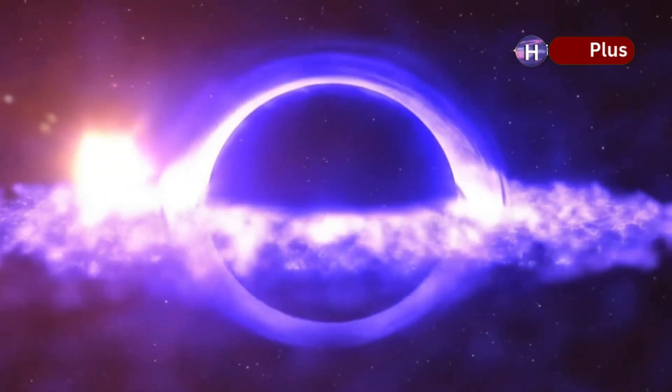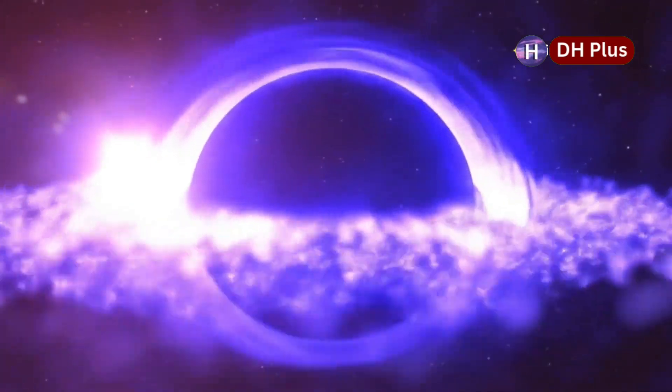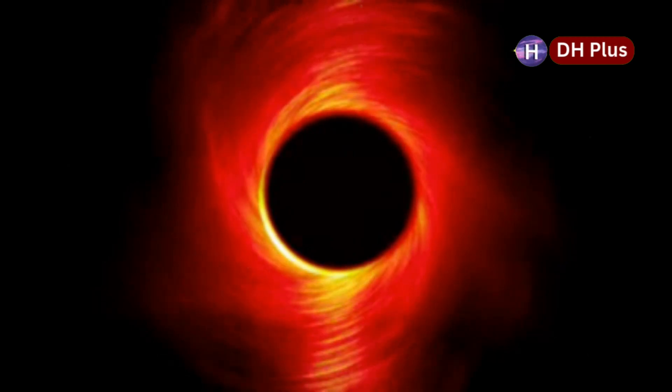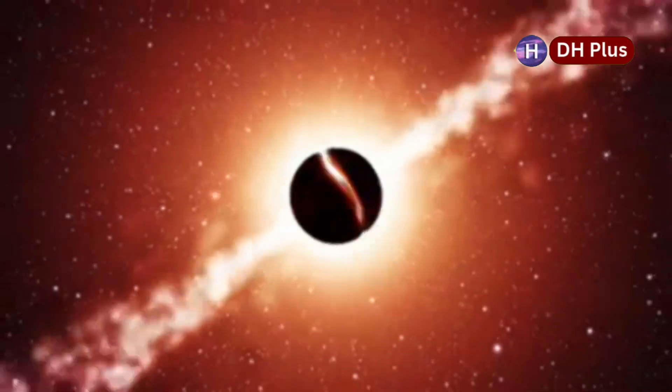Scientists call this the Eddington limit, the theoretical cap on how fast black holes grow. But this one seems to be on a diet after what must have been a wild cosmic feast. So how did it get so big, so fast?